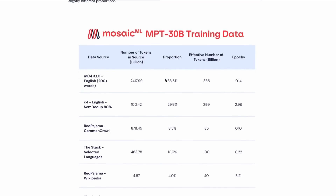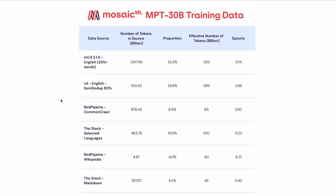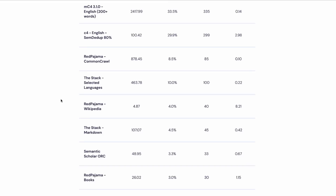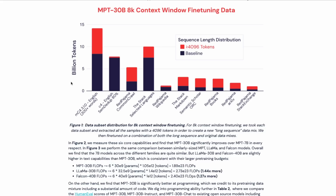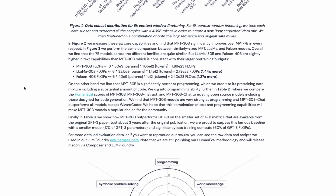Looking at the actual models and their training data, we can see it's a pretty similar split to the MPT-7.1, although people are now starting to use the Red Pajama dataset a lot more. They did quite a lot of training with a 4K token window and then fine-tuned for the 8K token window. It's interesting to see what they actually focused the fine-tuning on — like whether focusing more of it on code would radically affect the model.